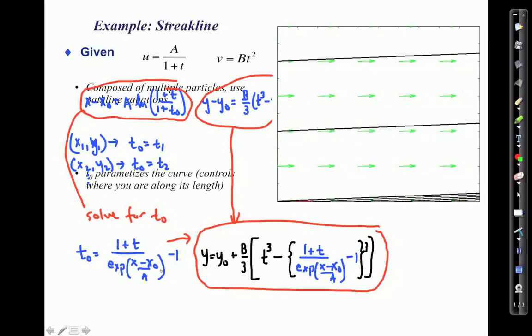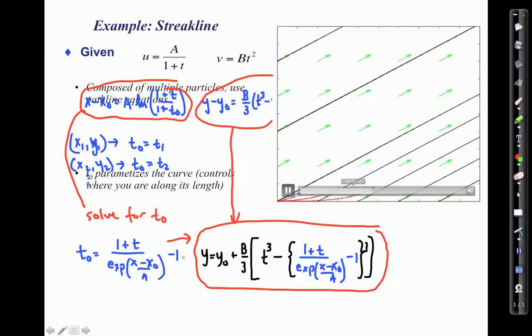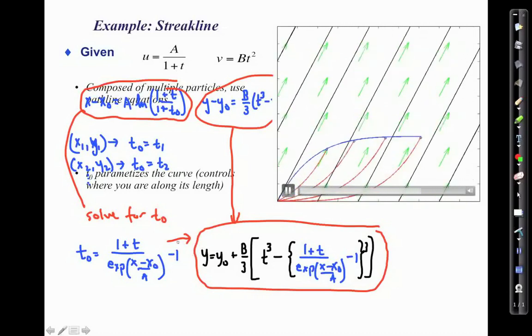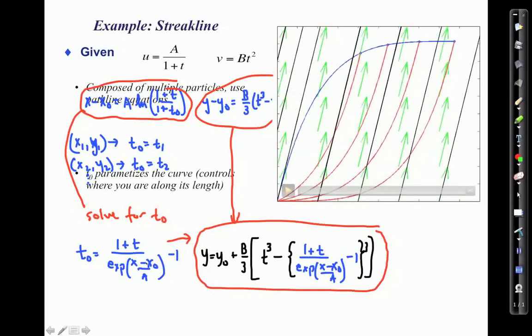You can see now this has our path lines, our stream lines, and our streak line is this blue curve here. And you can see more and more particles get added on to this release point. And here were our original four marked particles that I had for the path line example that are tracking out near the end of that. I've released many more particles in between those times. And you can see here that the streak line then looks different from both the stream lines and the path lines in this very simple unsteady flow.